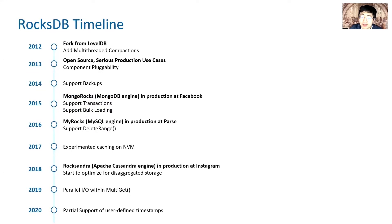We forked from LevelDB in 2012, open-sourced in 2013, and started to serve serious use cases by that time. Over the years we have improved performance and added features. Some serious database services adopted RocksDB as their storage engine in production in 2015 and 2016.